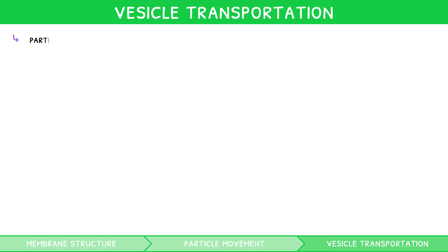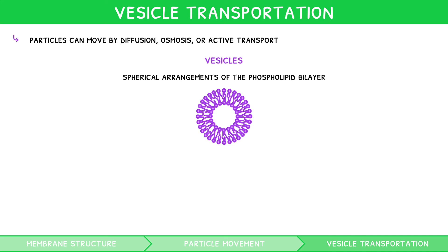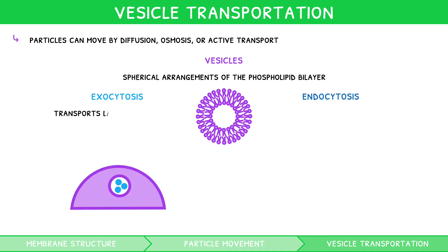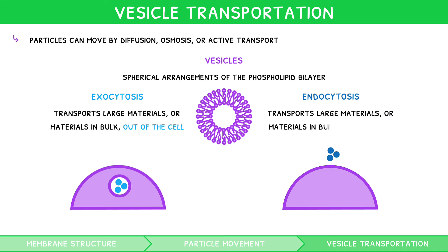Particles can move by diffusion, osmosis, or active transport — but what if you want to move large items or items in bulk? This is where vesicles play a key role. Vesicles are simply spherical arrangements of phospholipid bilayer, like a capsule, that can form thanks to the fluidity of the membrane. Vesicles are involved in two forms of active transport called exocytosis and endocytosis. Exocytosis transports large materials or materials in bulk out of the cell. Endocytosis transports large materials or materials in bulk into the cell.